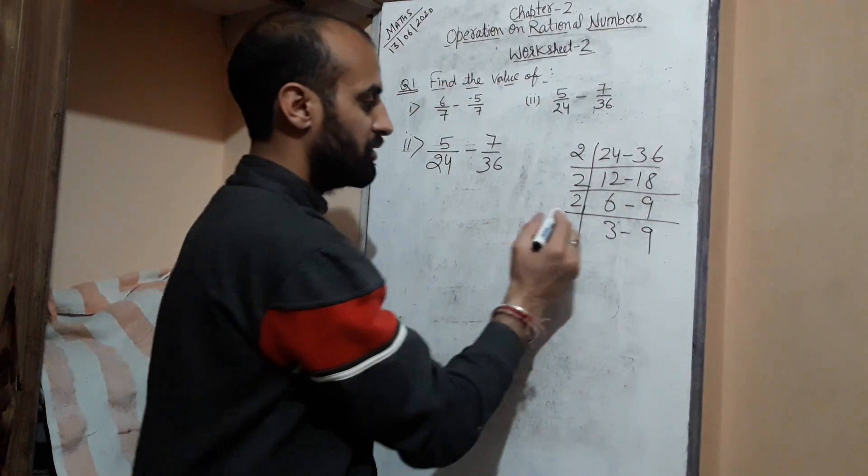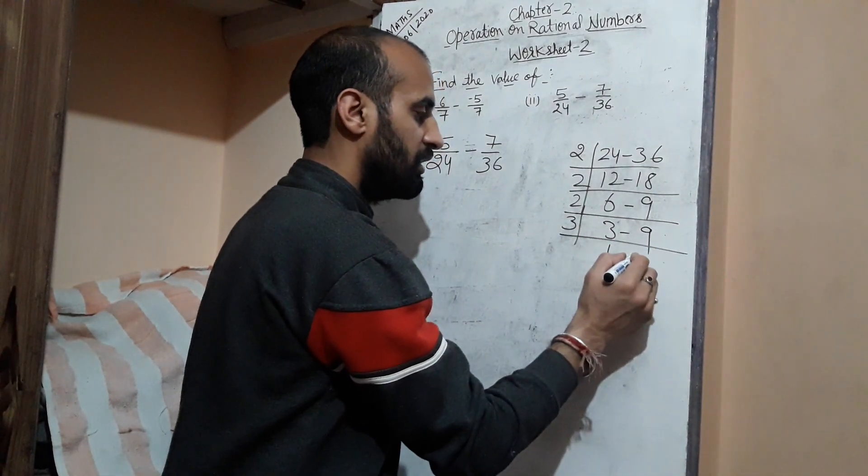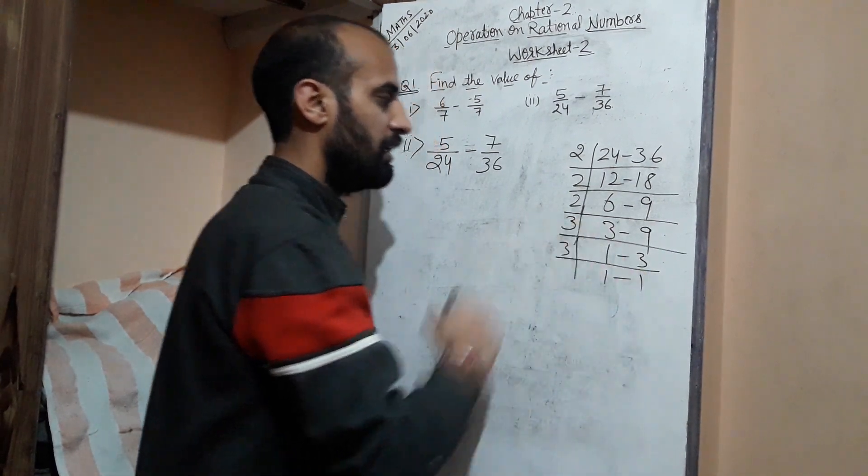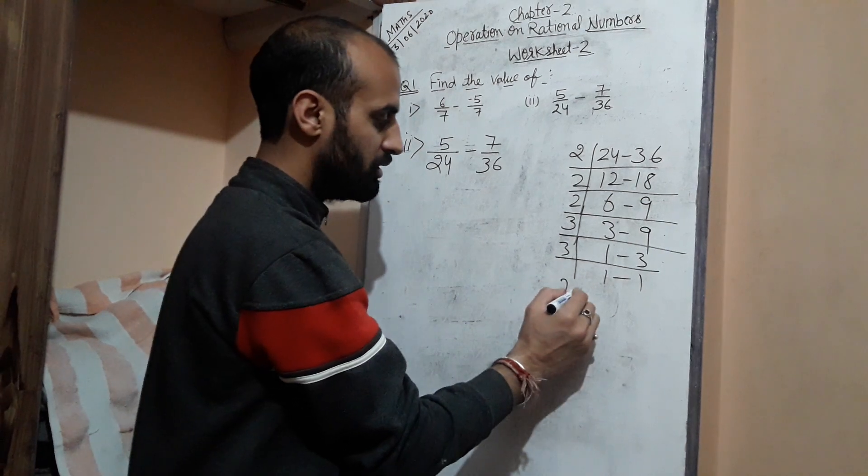Now you can see 3 and 9 are both not in the table of 2, so you can start with the next prime number, that is 3: 3→1, 3→1, 9→3. Once again, in this way, whatever numbers you are getting on this side, you need to multiply all. That means 2 × 2 × 2...